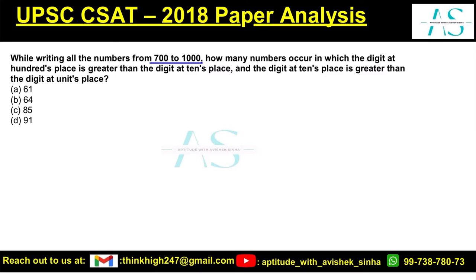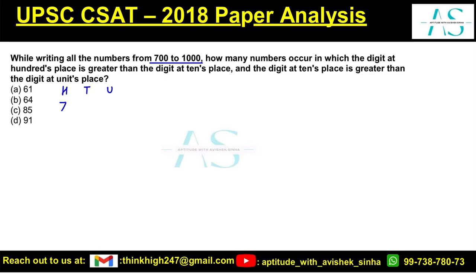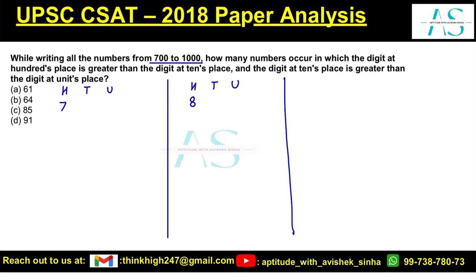The range is from 700 to 1000, so I can have the 100th, 10th, and unit digits. This can start from 7, because it cannot start from 1, 2, 3, 4, 5, or 6 — that would fall outside the range. Another set would start from 8, and the last case would be when the numbers start from 9. So there are three possibilities.